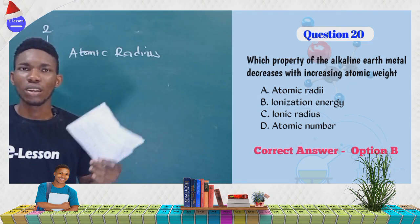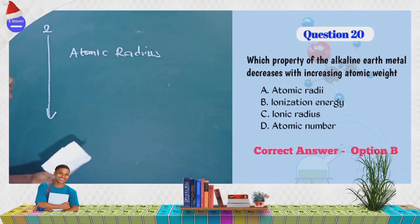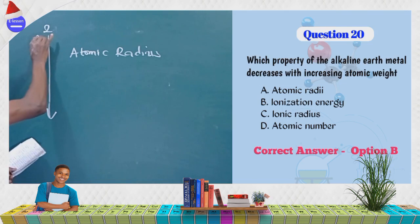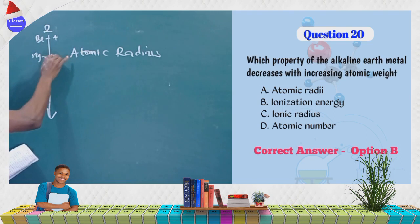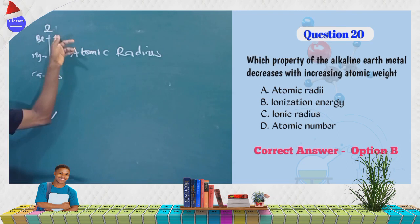Atomic radius increases down the group — as more shells are added, the size of the atom gets bigger. Ionic radius similarly increases. Atomic number also increases as you go down: beryllium is 4, magnesium is 12, calcium is 20 — increasing by 8 each time.